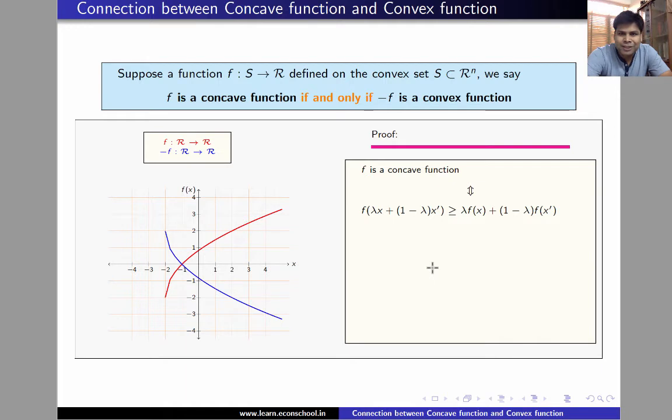Now we want to show that minus f is a convex function. So we'll multiply both sides by negative 1 to get this inequality: minus f lambda x plus lambda x prime is less than or equal to minus lambda fx plus 1 minus lambda fx prime. Notice that the inequality sign flips. Earlier it was greater than or equal to, now it's less than or equal to because we multiplied both sides by negative 1.